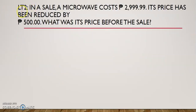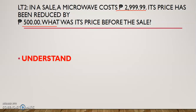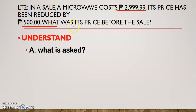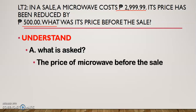I have here from learning task 2. In a sale, a microwave cost 2,999.99. Its price has been reduced by 500 pesos. What was its price before the sale? The first step in solving word problems is you have to understand the problem. It will help you if you underline first the important details. In understanding, you have to know what is asked from the problem, so that you would know how to answer it. What is asked in this particular problem is the price of a microwave before the sale.